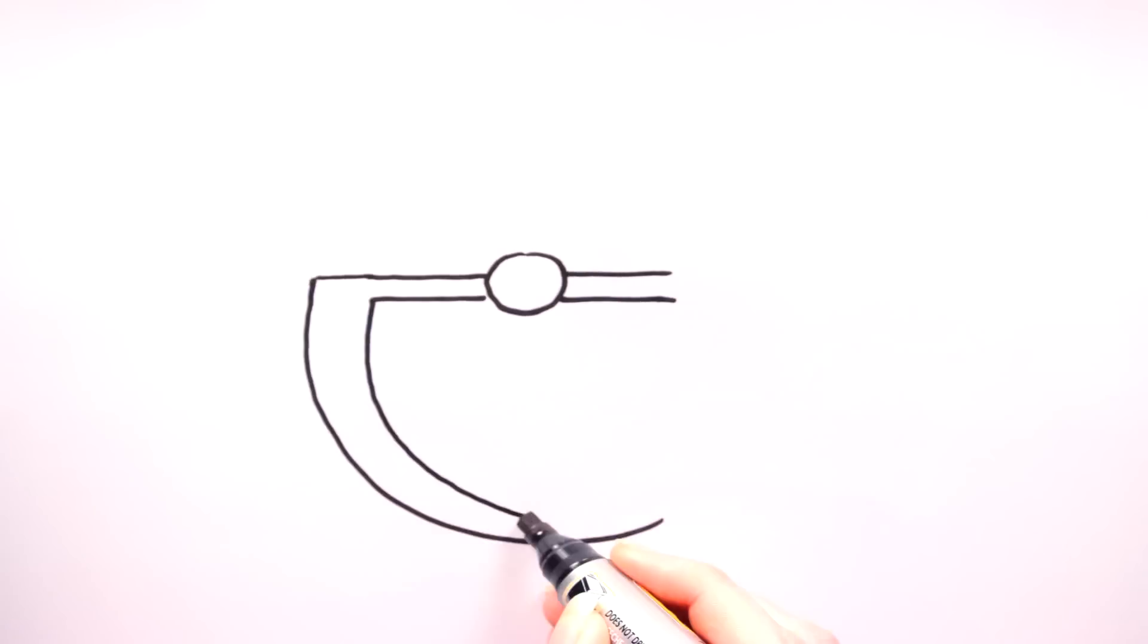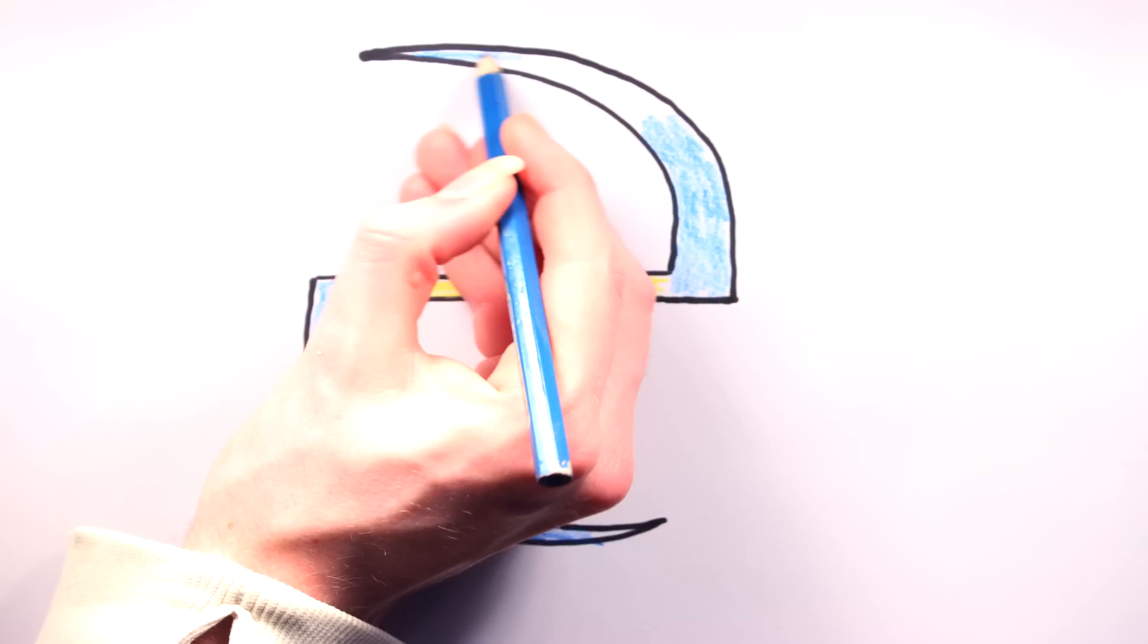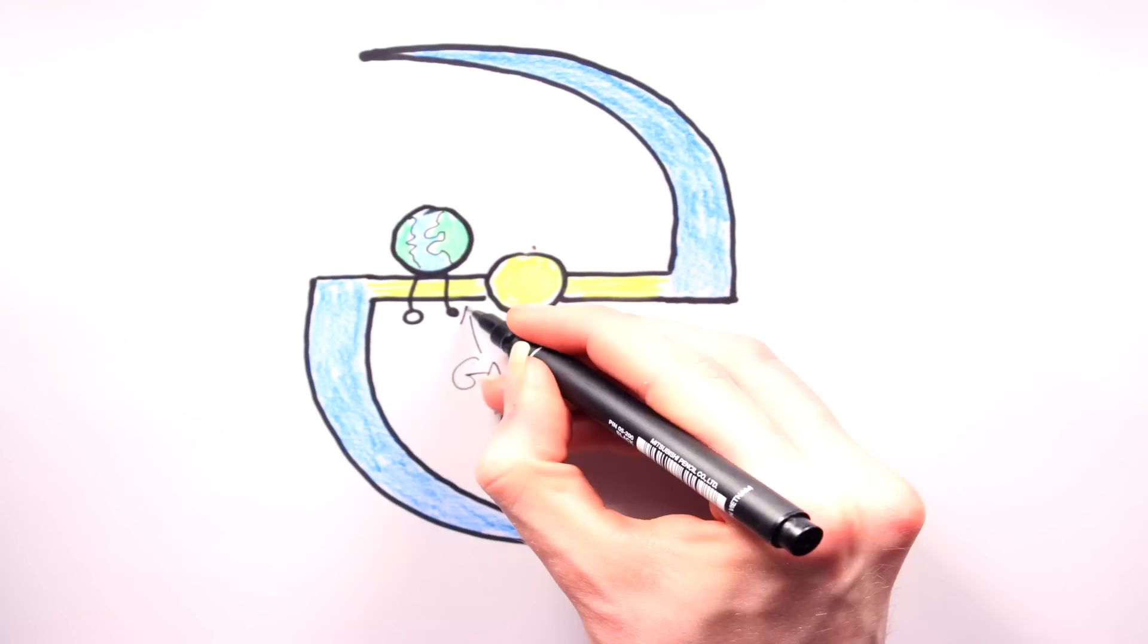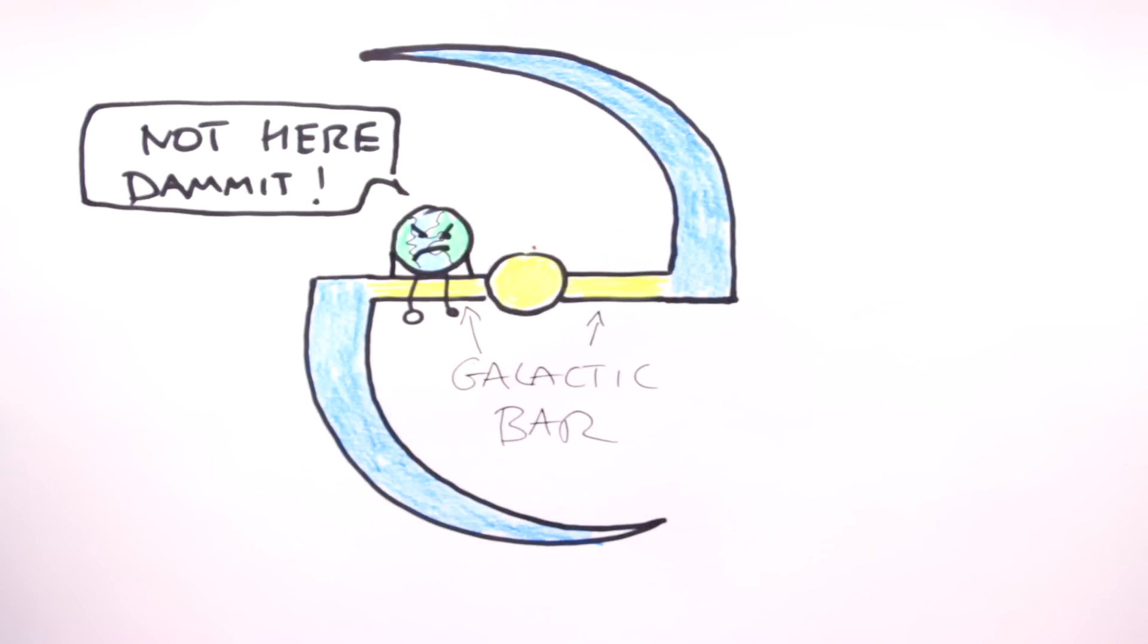7. In barred spiral galaxies, the bar is as dangerous as the central bulge region. No planet should be placed here.